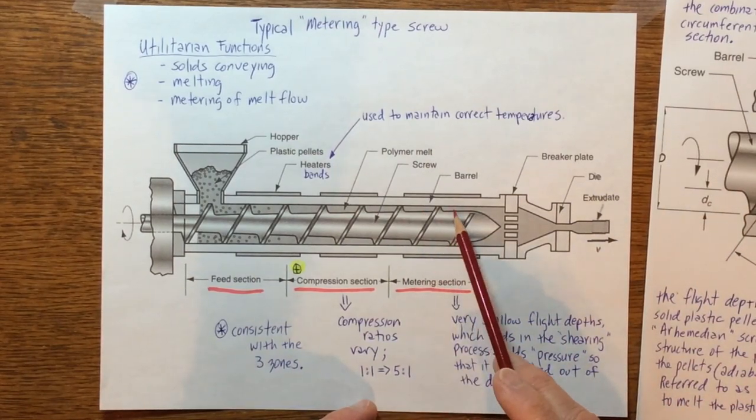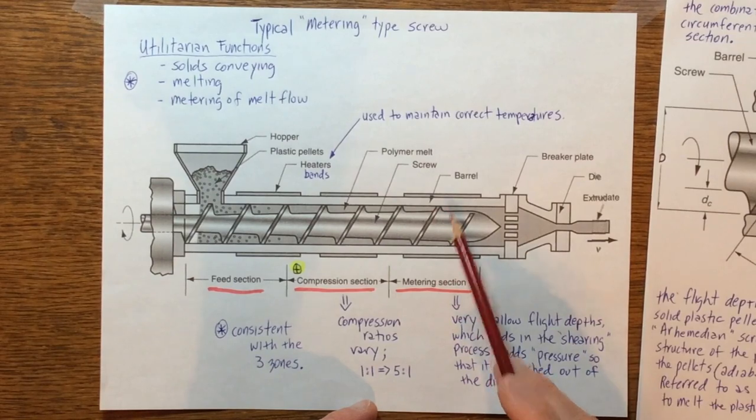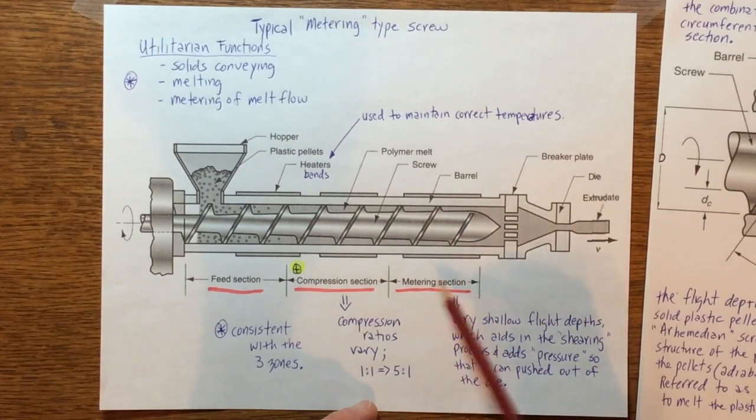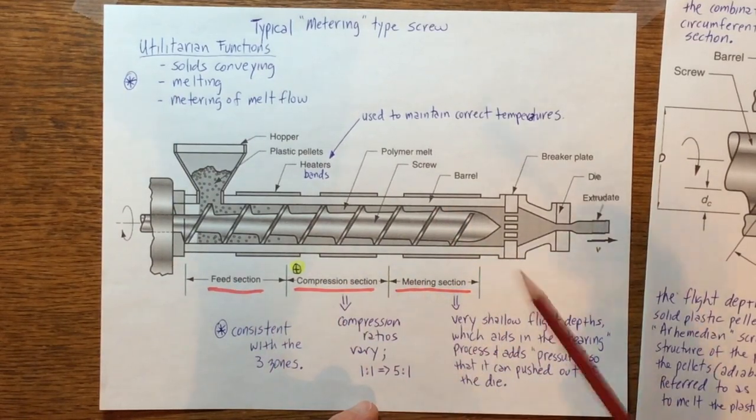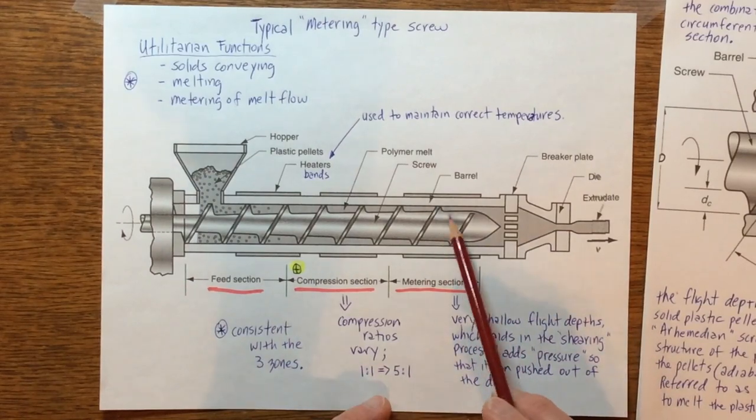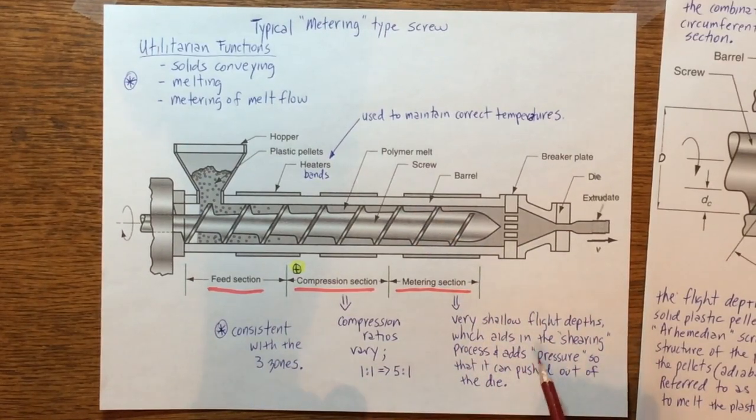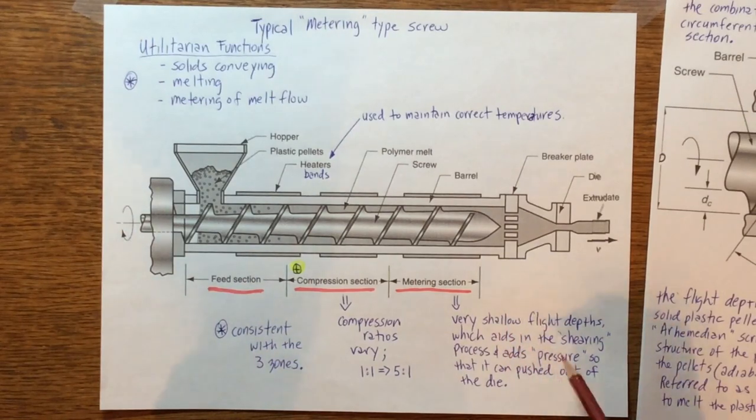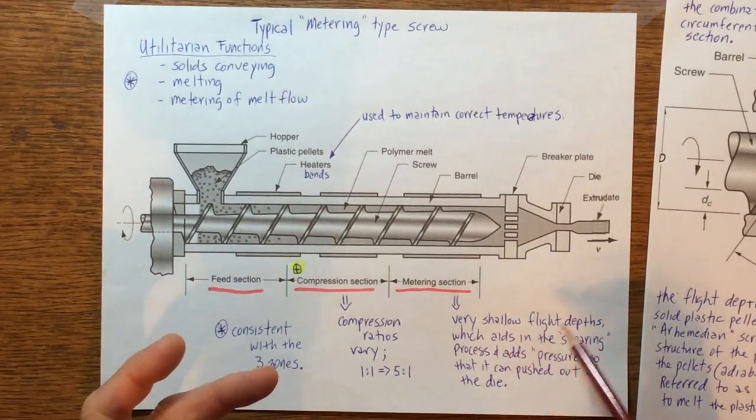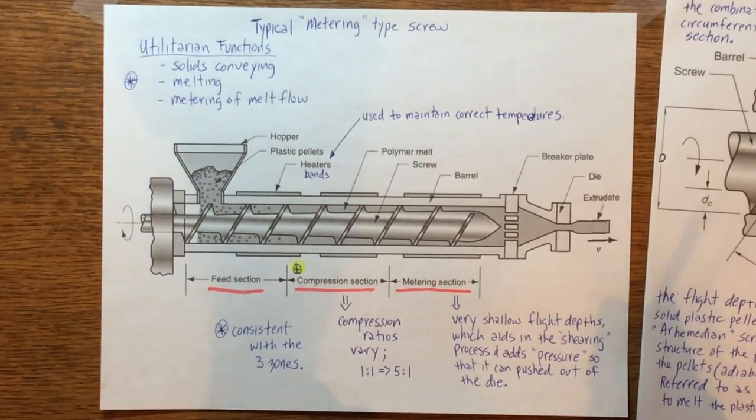Then it gets towards the end, it's more of a very finer finer volume, and that's called the metering section. So we have the feed, compression, and metering section. You can see the flight depths here are very very shallow, which obviously aids in the shearing process a little bit more and also adds pressure.